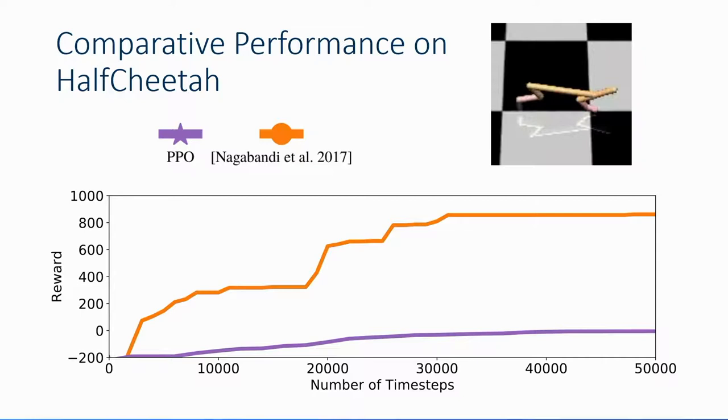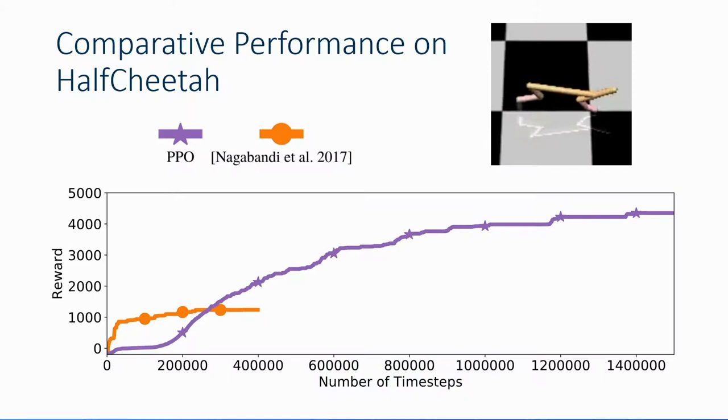So how well do these approaches actually work? We have the half-cheetah task, where your goal is to walk forwards. We have a policy gradient method in purple called PPO, as well as a model-based RL method in orange by Nagabandi et al. In the limited data regime, model-based RL does really well and learns quite quickly. But if we look at overall performance in the long run, PPO eventually outperforms model-based RL — but at what cost? It requires eight hours of interaction with the actual environment, which in certain cases is not exactly feasible.